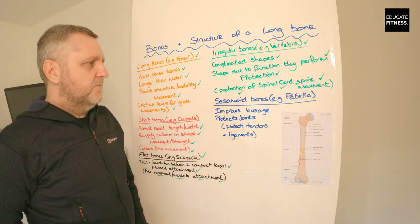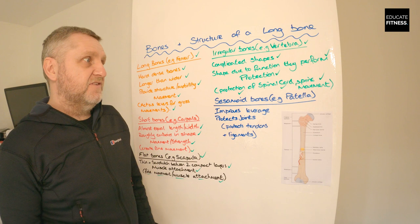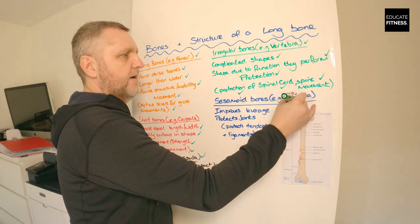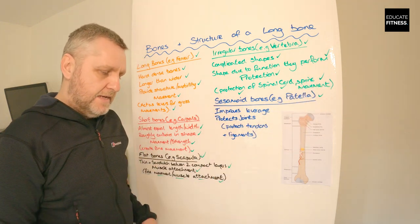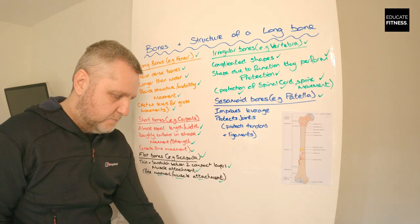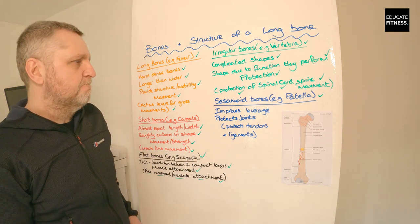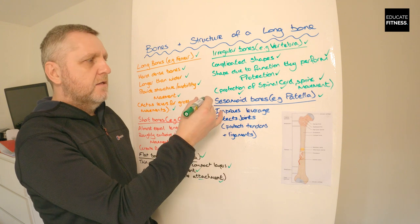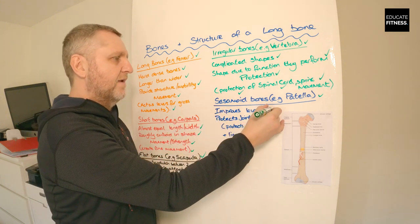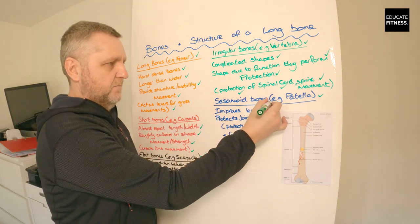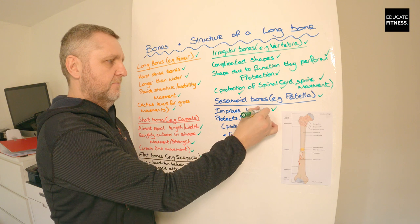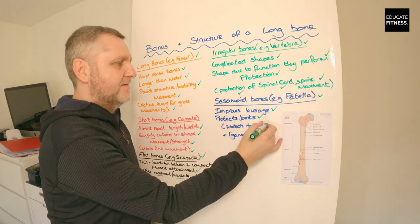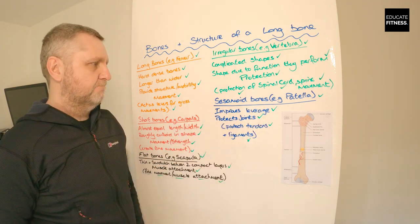The final classification is the sesamoid bone. An example would be the small patella bone in your knee. The sesamoid bones improve leverage, protect joints, and ultimately protect the tendons and ligaments.